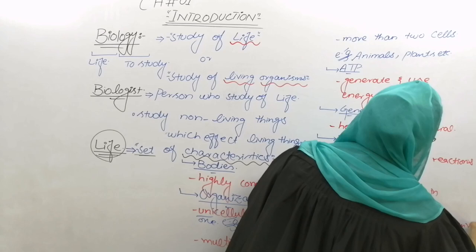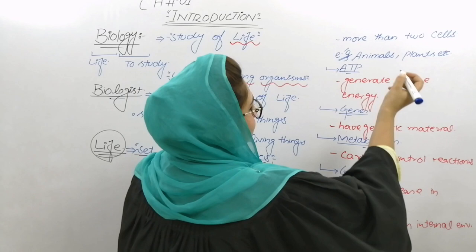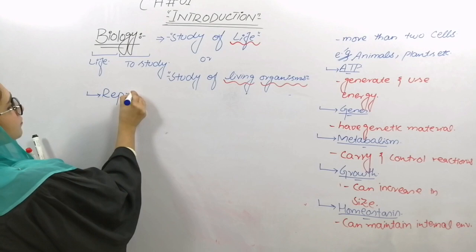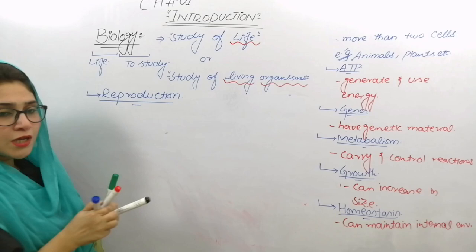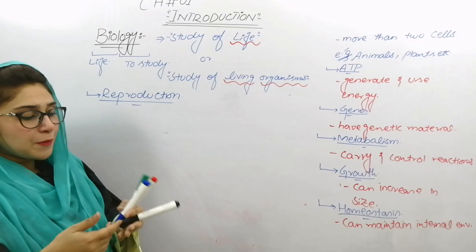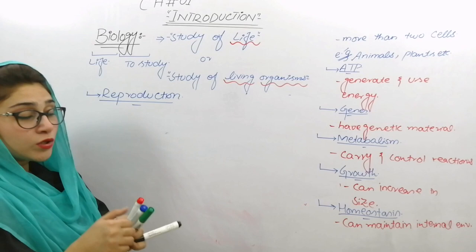इसके बाद जो next character है — That is Reproduction. Reproduction का मतलब होता है دوبارہ سے produce करنا۔ यानि ये जितने भी जानदार होते हैं वो नए offspring produce कर सکتے ہیں — अउलाद पैदा कर सकते हैं।